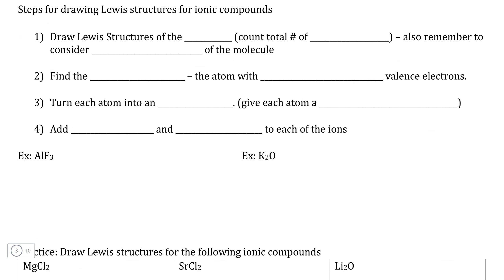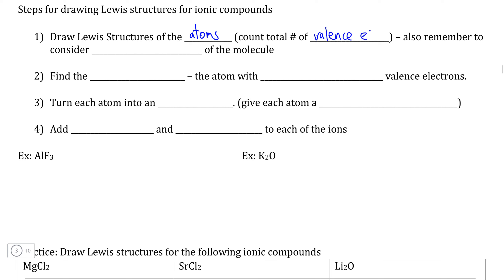When learning the individual steps for drawing the Lewis structures of compounds, it's easiest to use examples. We're going to use two contrasting examples: aluminum fluoride and potassium oxide. The first step with any ionic compound is to draw the atoms that make up each of the individual compounds and count the total number of valence electrons so that we see what we are dealing with.